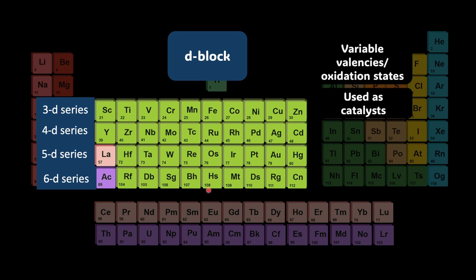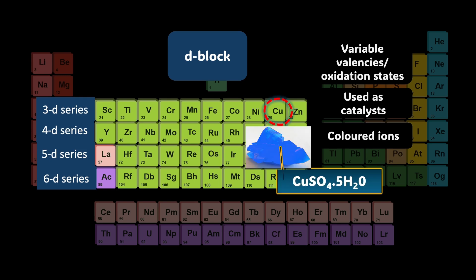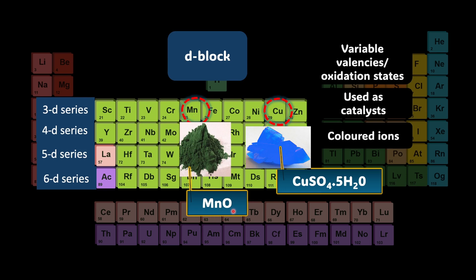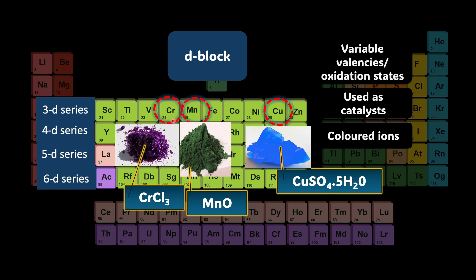Another fascinating property of D block elements is that many of their ions are colored. This is due to electronic transition between the D orbitals when they absorb visible light. We'll study more about them in coordination chemistry. The compounds of copper, chromium, manganese are colored. Hydrated copper sulfate is blue in color, compounds of manganese are green, and chromium is purple.